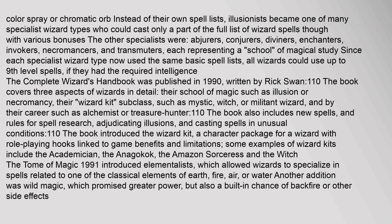The other specialists were: abjurers, conjurers, diviners, enchanters, invokers, necromancers, and transmuters — each representing a school of magical study. Since each specialist wizard type now used the same basic spell lists, all wizards could use up to 9th level spells if they had the required intelligence. The Complete Wizard's Handbook was published in 1990, written by Rick Swan.